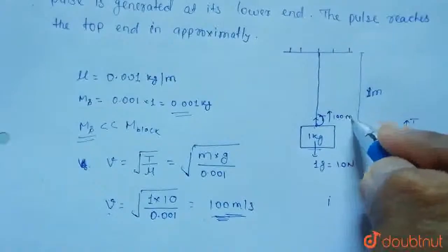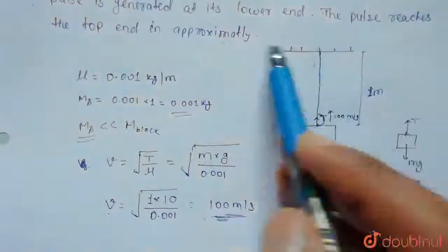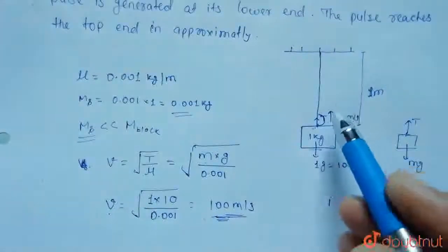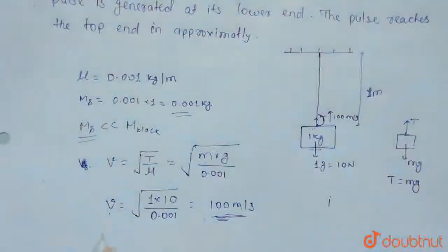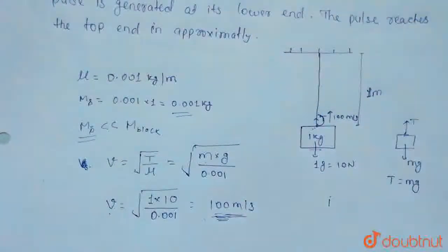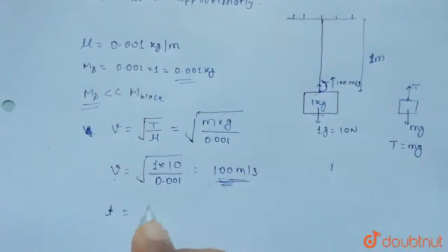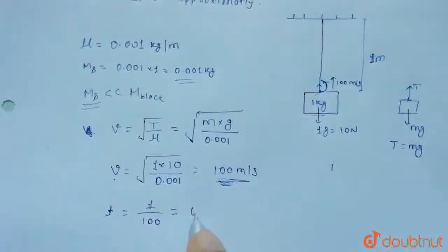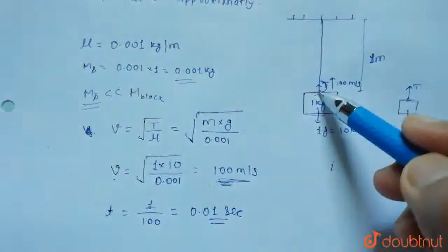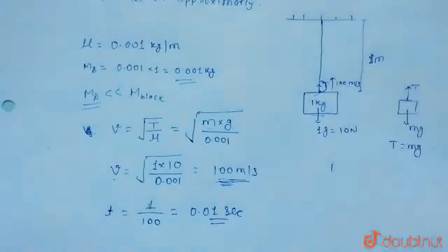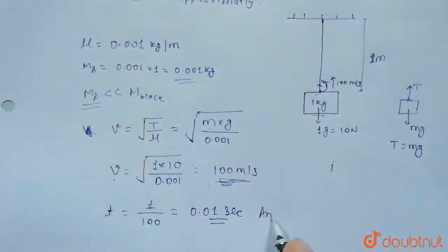Question में बोला है कि lower end पे एक wave pulse generate किया गया, तो उसको ऊपर पहुंचने में कितना time लगेगा? Wave pulse की velocity 100 meter per second है, distance 1 meter है। Time taken by the pulse to reach the top = distance / velocity = 1 / 100 = 0.01 second. So this is the required answer. Thank you.